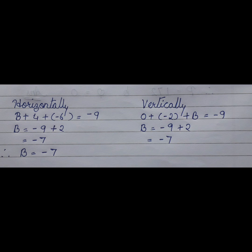Let us see B horizontally. B plus 4 minus 6 is equal to minus 9, because the total sum of all the figures horizontally and vertically should come as minus 9. B is equal to minus 9 plus 2 and I get B as minus 7.